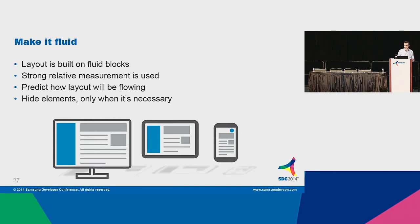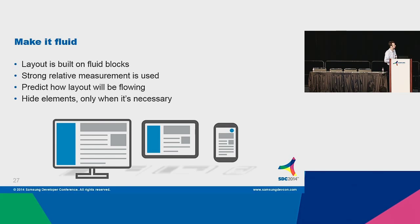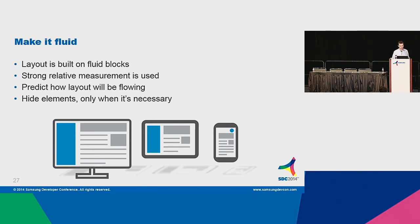The third way is to make it fluid. Fluid designs are made from fluid boxes. Here is an example — I think this will be the best illustration. This is the same design shown on different resolutions and different devices. As you can see, this block and this block are fluid and they will adapt — they have different sizes. And it will scale and adapt for the different device sizes. You should hide elements when they are not necessary and use a more button, as shown in the example.